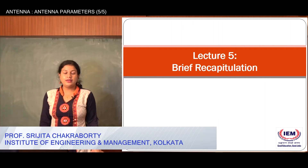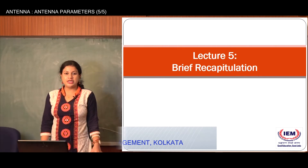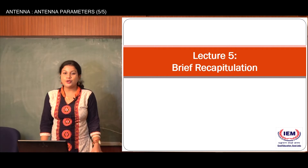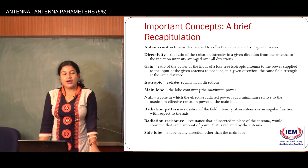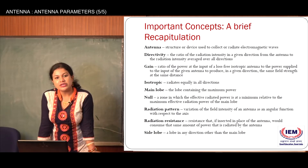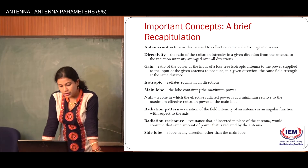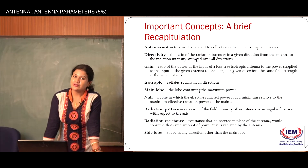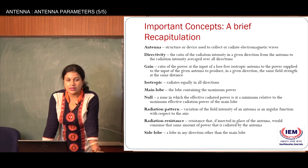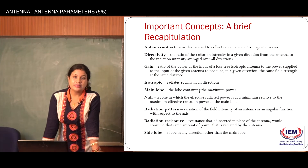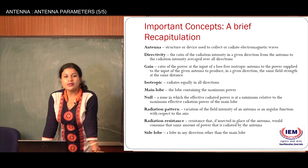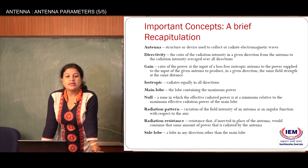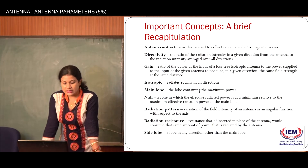Welcome back. In this last session, a brief introduction, I will be recapitulating everything we have done in the entire course. To begin with, what is an antenna? An antenna is a structural device used to collect or radiate electromagnetic waves. It is defined as a transducer converting electrical energy to electromagnetic energy and vice versa. At the transmitting station it converts electrical energy to electromagnetic energy, and at the receiving station it converts electromagnetic energy to electrical energy.